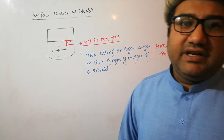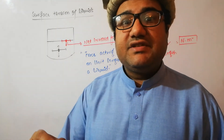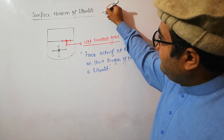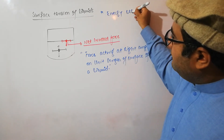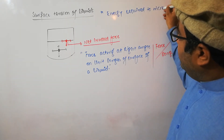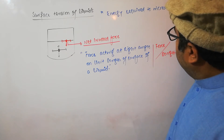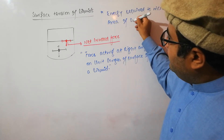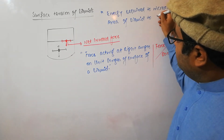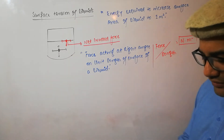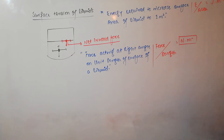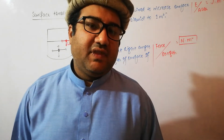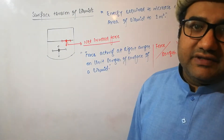So if we want to increase the surface area of the liquid, we will have to do some work. This gives us the second definition of surface tension: surface tension is the energy required to increase the surface area of a liquid by 1 m². From this we can draw the second unit of surface tension — it is energy per unit area. The unit of energy is joule and area is meter squared, so the second unit of surface tension is joule per meter squared (J/m²), derived from this second definition.